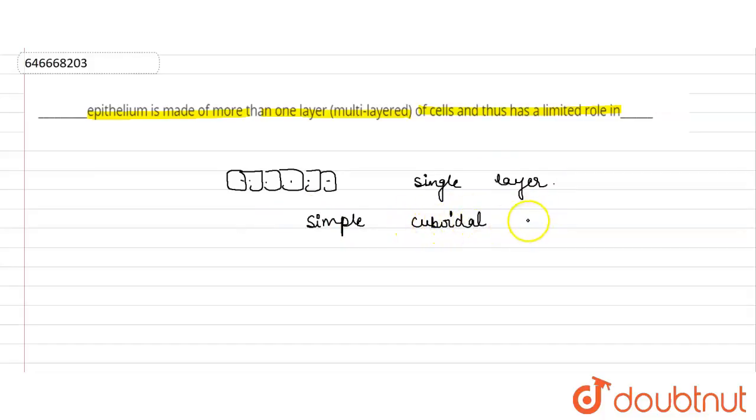But if the layer is multi-layer, that is one more layer is present above this, and again one more layer of the cuboidal cells, of cube-like cells are present, then this will be called as, instead of simple, it will become the compound. It will become the compound.